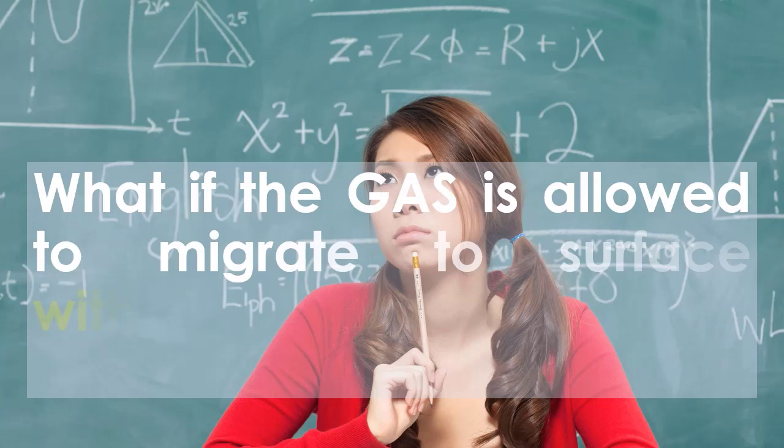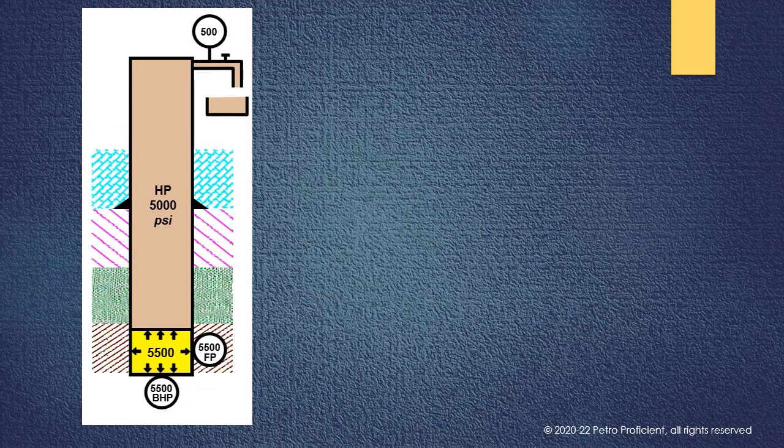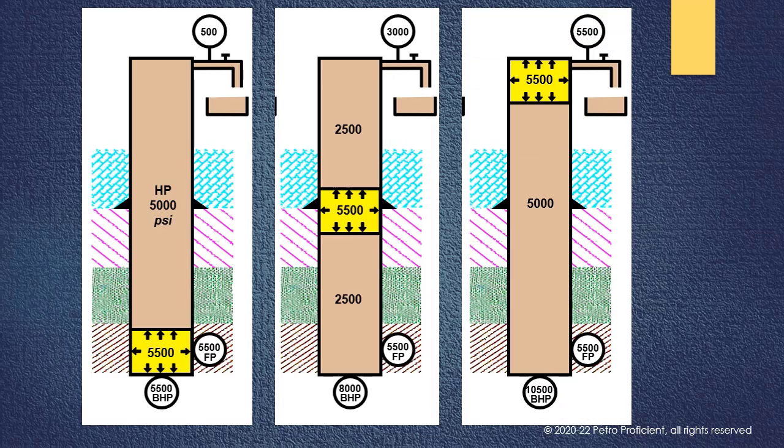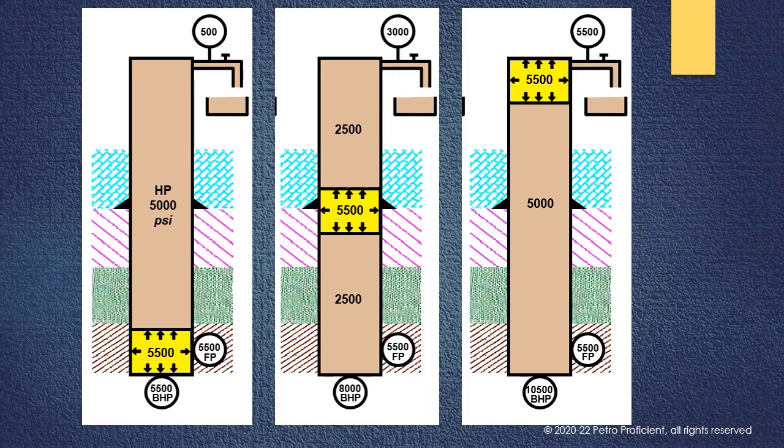What if the gas is allowed to migrate to surface without expansion? Let's see an example. In this illustration, a gas bubble enters a well bore and the pressure at the bottom is 5,500 psi. Hydrostatic pressure exerted by fluid column is 5,000 psi. As the gas bubble migrates halfway through, the hydrostatic pressure above the bubble is 2,500 psi, and the pressure in the bubble is still 5,500 psi, as the bubble is not expanding. When the bubble reaches the surface, the surface pressure is 5,500 psi and bottom hole pressure 10,500 psi. This is equivalent of 20 ppg fluid in the well. In most cases, before the gas reaches surface, breakdown of weaker formation would occur, or in the worst case, the casing could burst.